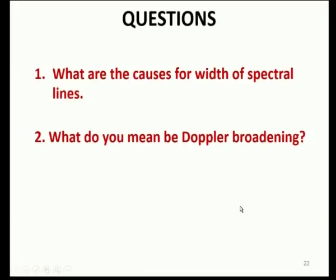To summarize this session: we discussed two important factors of spectral lines. The width of the spectral line is due to natural line width — arising from collision broadening, Doppler broadening, and Heisenberg's uncertainty principle — and also depends on the resolving power of the instrument. The intensity of the spectral line depends on three factors: transition probability, the relative population of electrons in energy levels, and Beer-Lambert's law, which states intensity is directly proportional to path length and concentration of the sample. In the next class, Beer-Lambert's law will be discussed in detail.